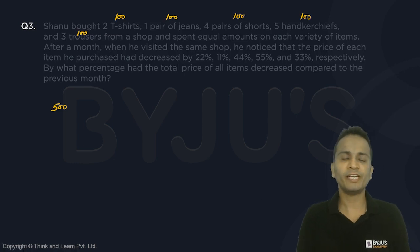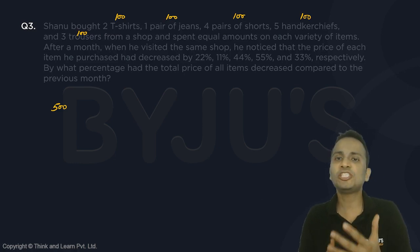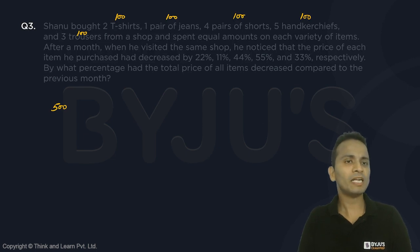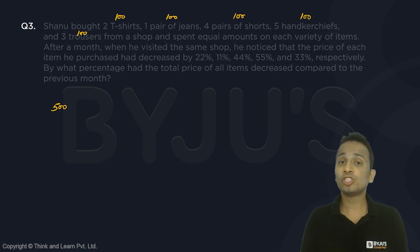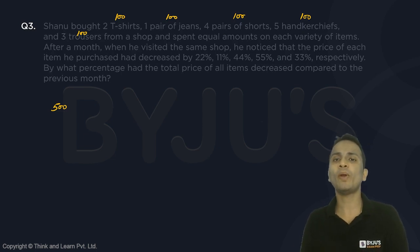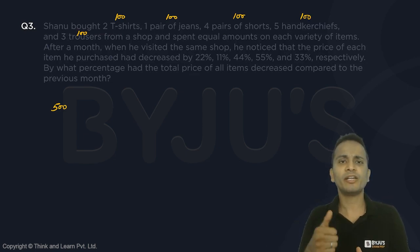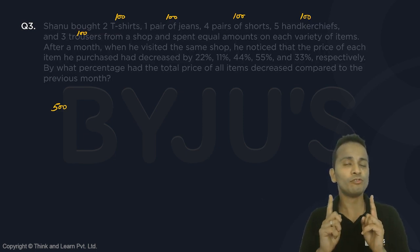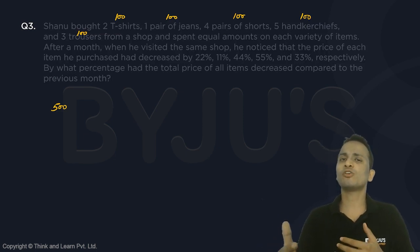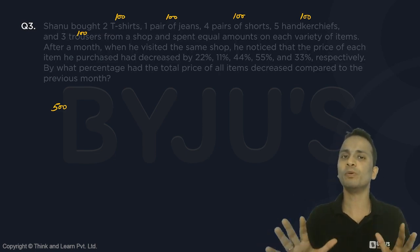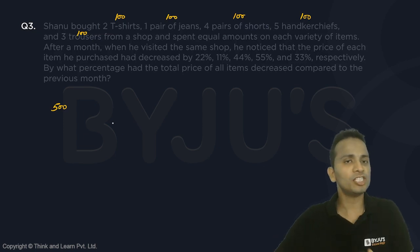There is no need to find the price of each T-shirt, each pair of shorts, each handkerchief, or each trouser. After a month, he visited and noticed that the price of each item had decreased by 22%, 11%, and so on respectively. The price of each shirt reduced by 22%, so the price of two shirts combined will also decrease by 22% — percentage change remains the same.